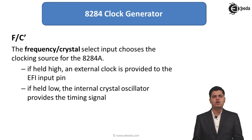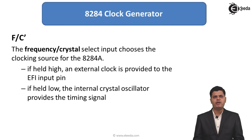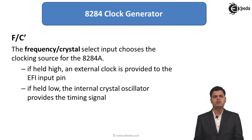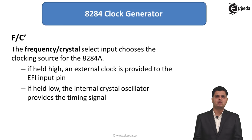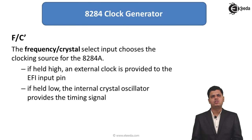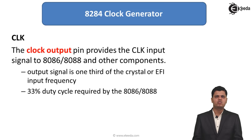The next pin is F/C bar, which signifies frequency or crystal. X1 and X2 are used for connecting the crystal oscillator, but if we want to provide the clock from another source, F/C bar is used. If it is held high, the external clock is provided to the EFI input pin. If it is held low, the internal crystal oscillator provides the timing signal. This pin selects whether to take the frequency from an external source or crystal.